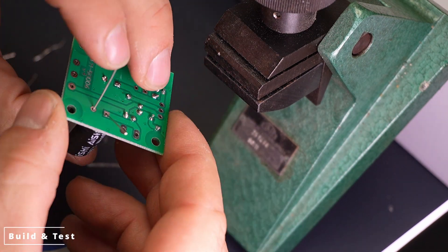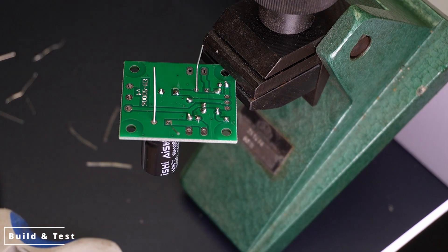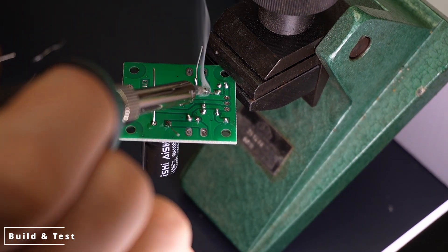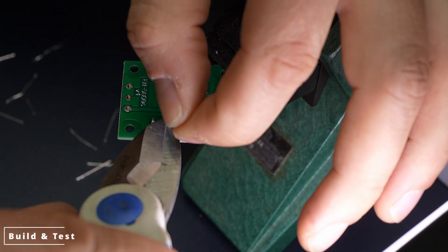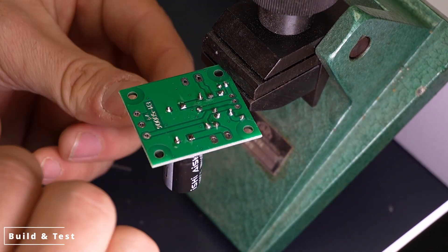Placing transistors and ICs. When soldering transistors and ICs, ensure proper orientation. For ICs, locate the marking that indicates pin 1. While soldering ICs, be cautious not to overheat the component.